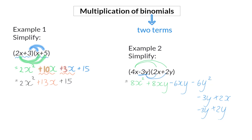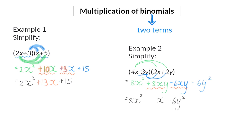To simplify further, I need to identify my like terms. Again, the two middle terms are like terms with a variable of xy. The first term, 8x squared, and the last term, minus 6y squared, stay like they are. For the middle term, I take 8 and subtract 6 to get my final answer of plus 2xy.